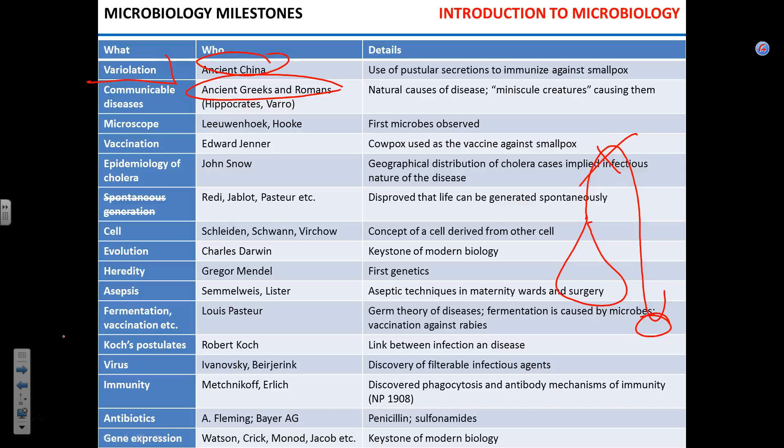Around the same time, scientists including Schwann, Schleiden, and Virchow proposed not only that all living things are composed of cells, but that one cell is derived from another — by division or differentiation. That was a breakthrough. Then in the middle of the 19th century came Charles Darwin — not Chuck Norris — who proposed the idea of evolution.